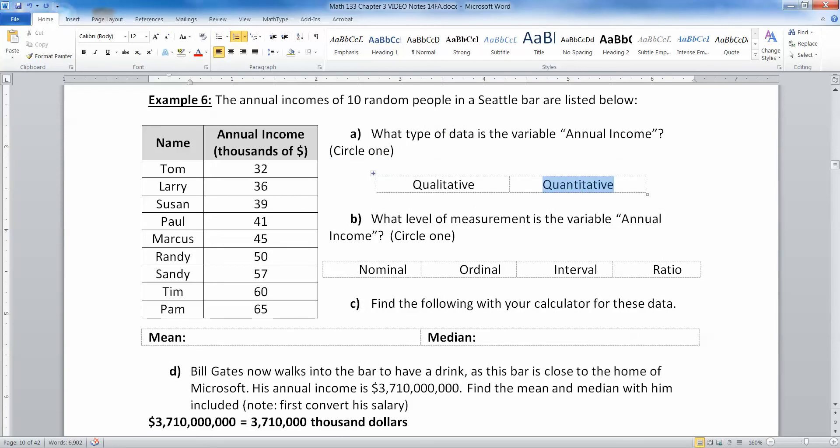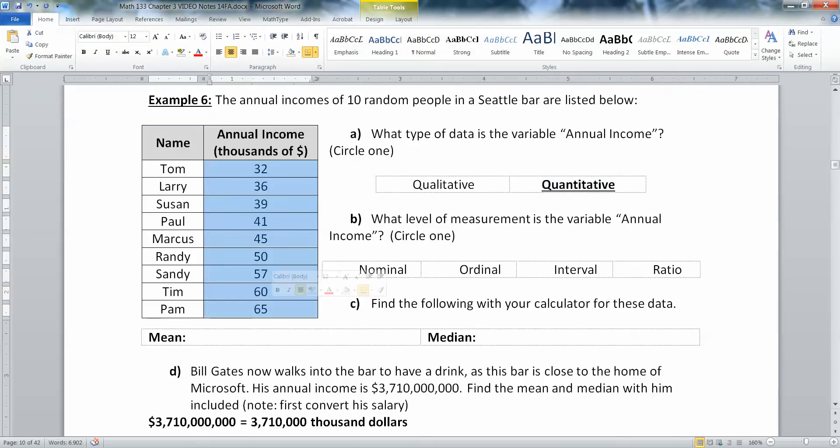So the first question is what type of variable is annual income? Is it qualitative or is it quantitative? The answer is it's quantitative. This is numerical, and it's numbers that you can actually perform meaningful calculations on. Otherwise accountants wouldn't have a job.